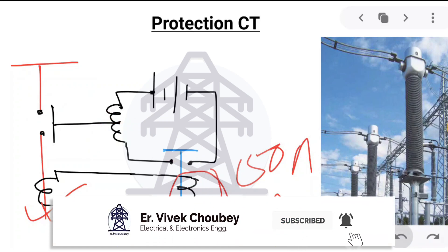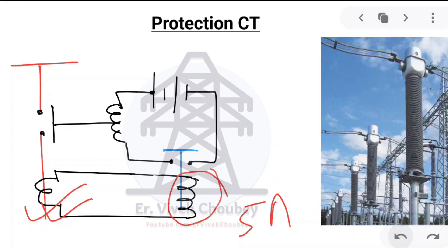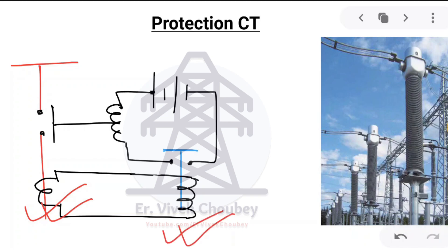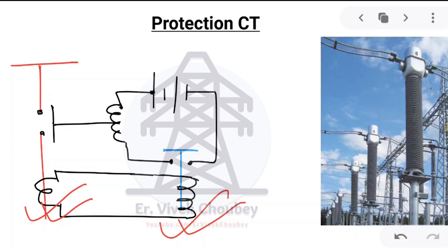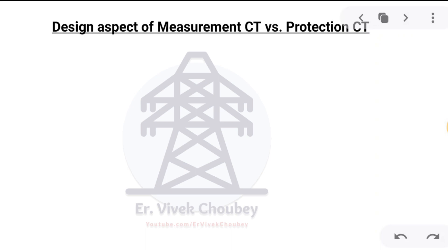An important point to note: in a normal situation, 5 amperes of current is flowing through the secondary of the protection CT — so why doesn't the relay spindle get attracted? This is because the relay is connected with a spring, such that only when fault current is present and the secondary is carrying 50 amperes will the spindle be attracted. Only then can the secondary coil generate the enormous amount of force required to attract the spindle of the relay. Under normal operation, the force generated by this coil is not enough to attract the relay contact.